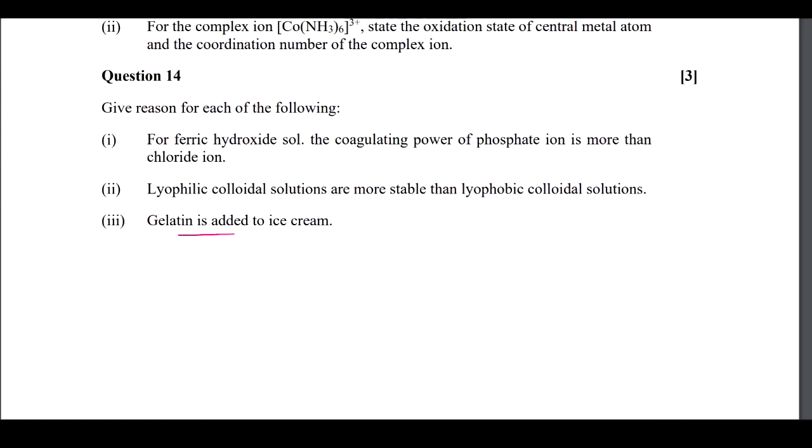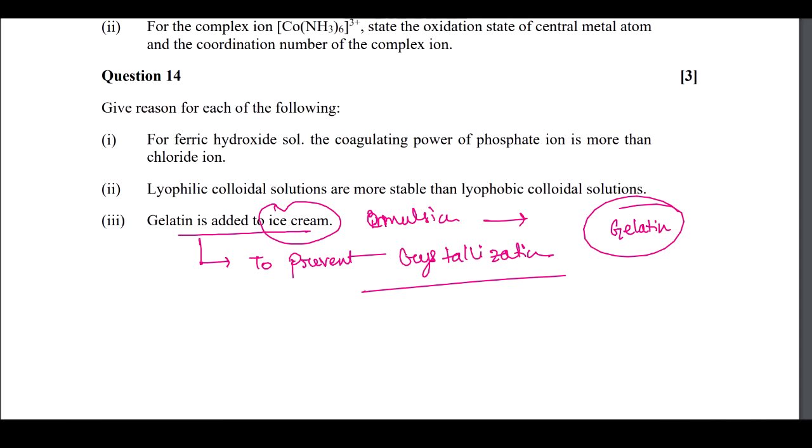Next question: gelatin is added to ice cream to prevent crystallization. Ice cream is an emulsion, and we need to add some stabilizer to stabilize the particular emulsion. That emulsifier or emulsifying agent or stabilizer is gelatin. Gelatin is added to stabilize the emulsion. This was your last question.